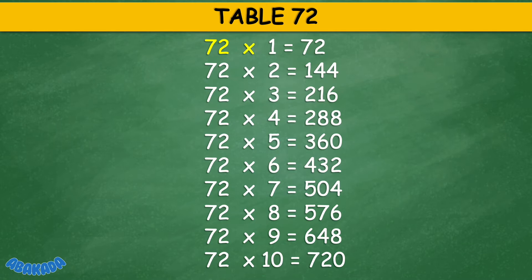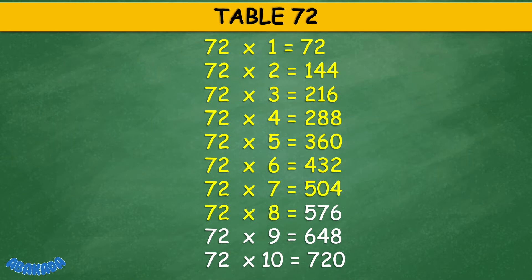Table 72: 72 times 1 equals 72, 72 times 2 equals 144, 72 times 3 equals 216, 72 times 4 equals 288, 72 times 5 equals 360, 72 times 6 equals 432, 72 times 7 equals 504, 72 times 8 equals 576, 72 times 9 equals 648, 72 times 10 equals 720.